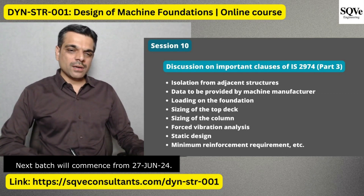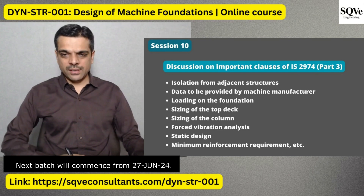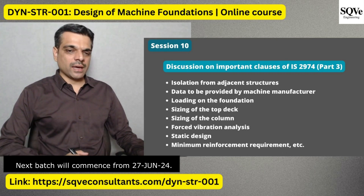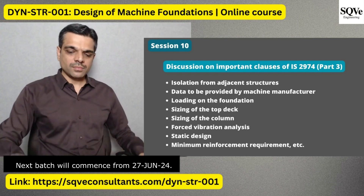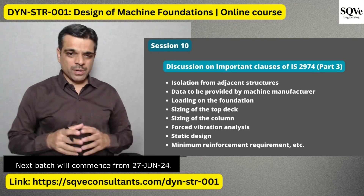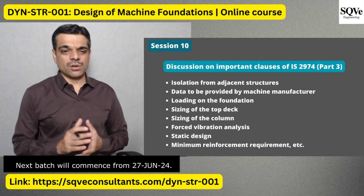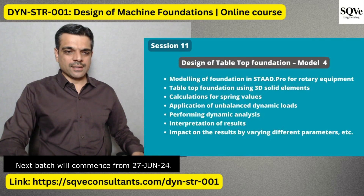In the next session, we'll talk about important clauses of IS 2974 Part 3, which is specifically for rotary equipment with medium or high-speed rotating machines. We'll cover data to be provided by the machine manufacturer, sizing of the top deck, sizing of columns, post-vibration analysis, static design, and related topics.